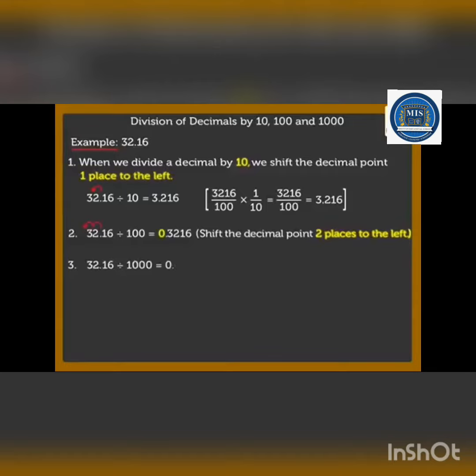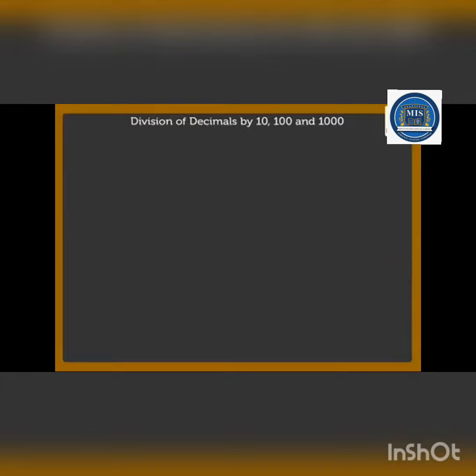In the same way, if we divide the same number by one thousand, then we will shift the decimal point three places to the left. So then what will be the answer? 0.03216. So let's take an example.